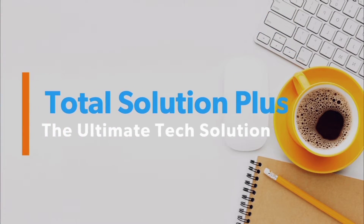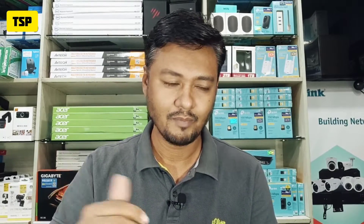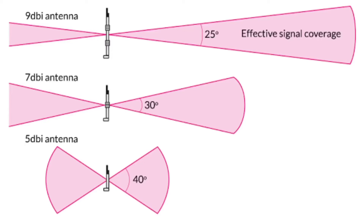The router antenna will determine the range. The antenna is responsible for network distribution. The first thing about the antenna is that it will depend on the quality of the range — the antenna will decide the quality and the path.